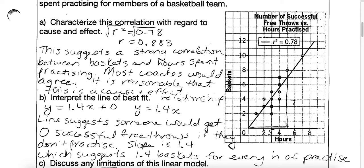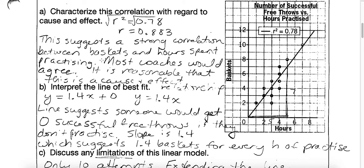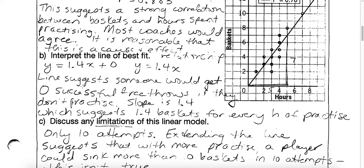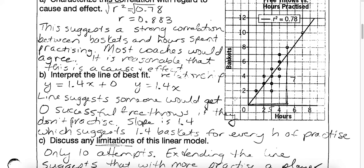That might be familiar — it's like what you did in grade nine math with a scatter plot, where the teacher asked you to draw a line of best fit by putting a line between all the points the best that you could. Because these points sort of look like they're going up to the right, we would say we have a strong positive correlation, suggesting a relationship between the number of baskets someone makes and the hours spent practicing. Most coaches would agree that the more you practice, the more baskets you'll make.